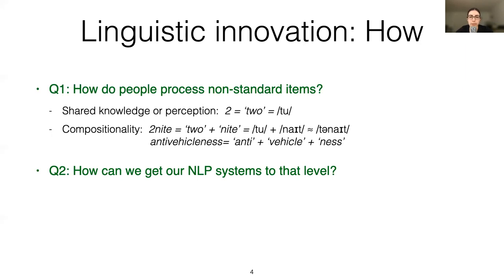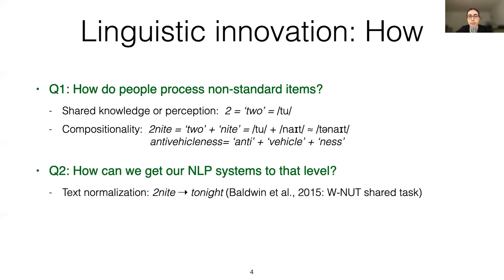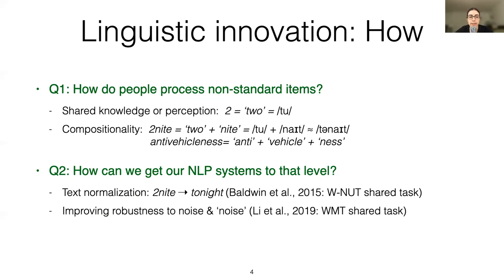I'm ignoring the entire sociolinguistic dimension here — I'm only talking about the literal meaning of those words. Historically, there are two approaches. The first is text normalization, which means converting non-standard items to some standardized representation. The second is improving the systems themselves, making them more robust to variation, usually by pre-training on what people call noisy data. The word 'noisy' here can correspond both to actual noise — truly random corruption — and to non-random creative phenomena like what I'm discussing.